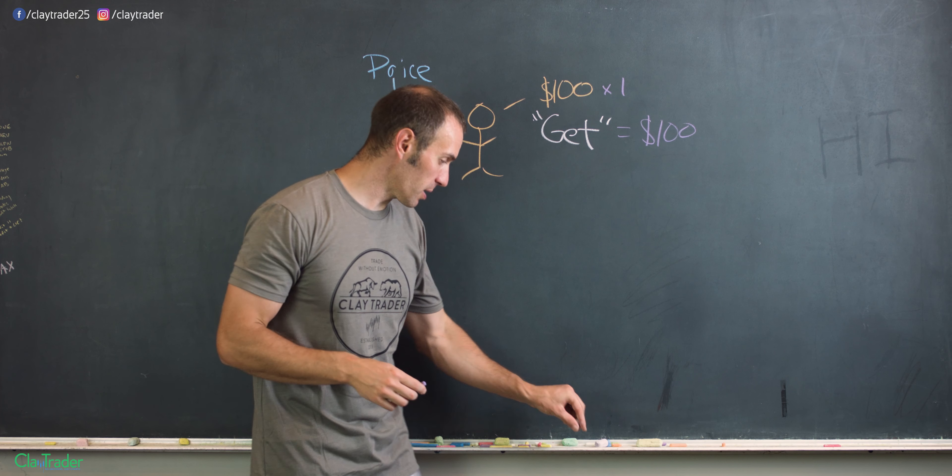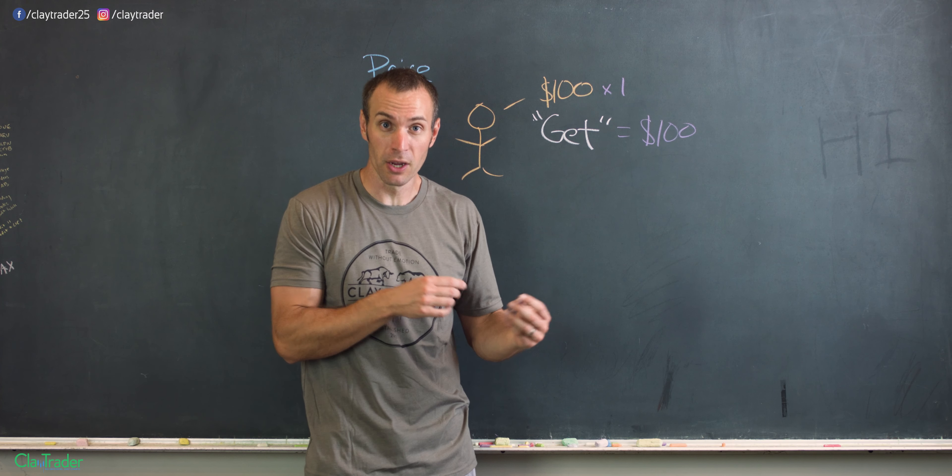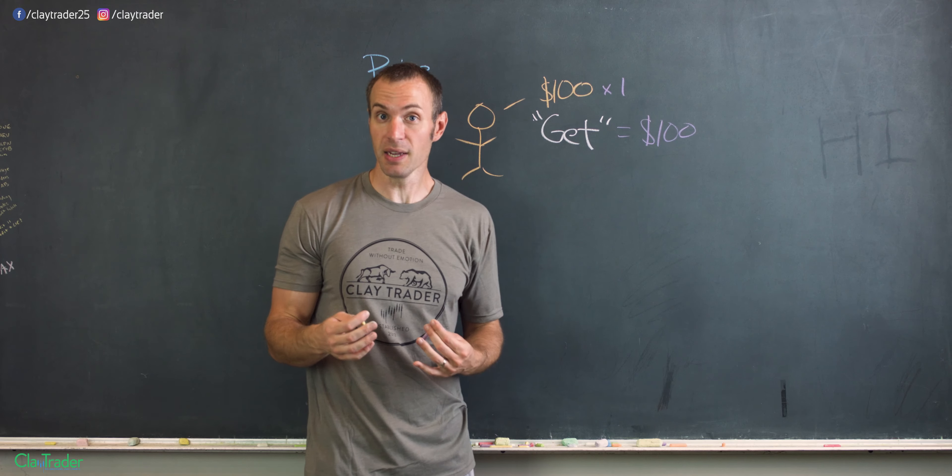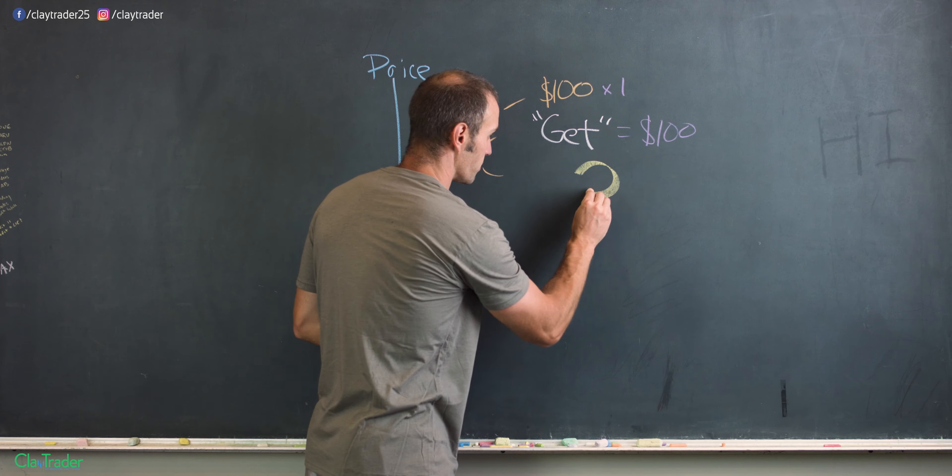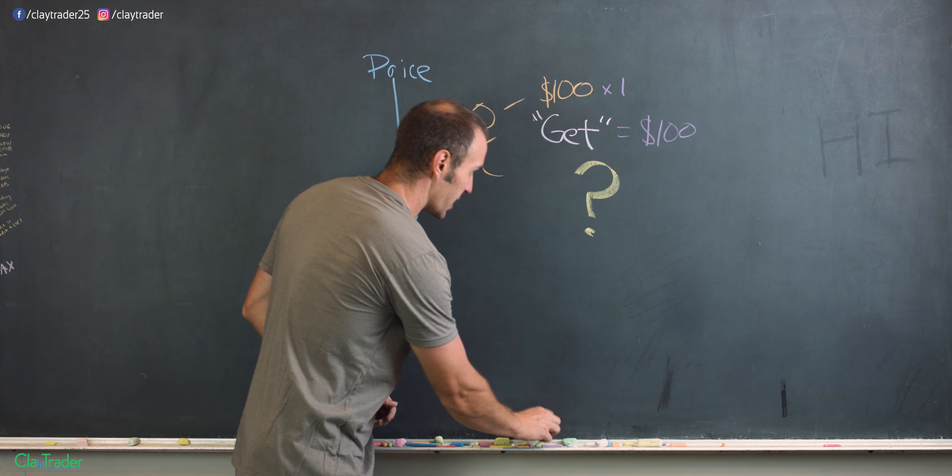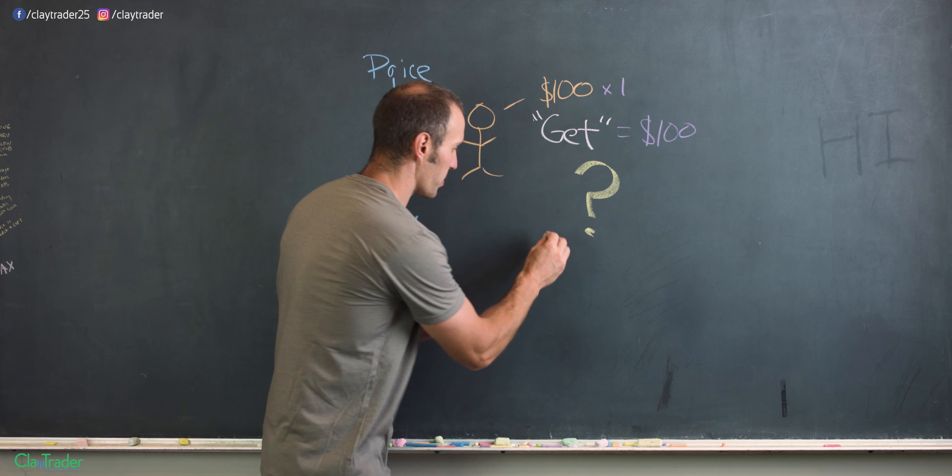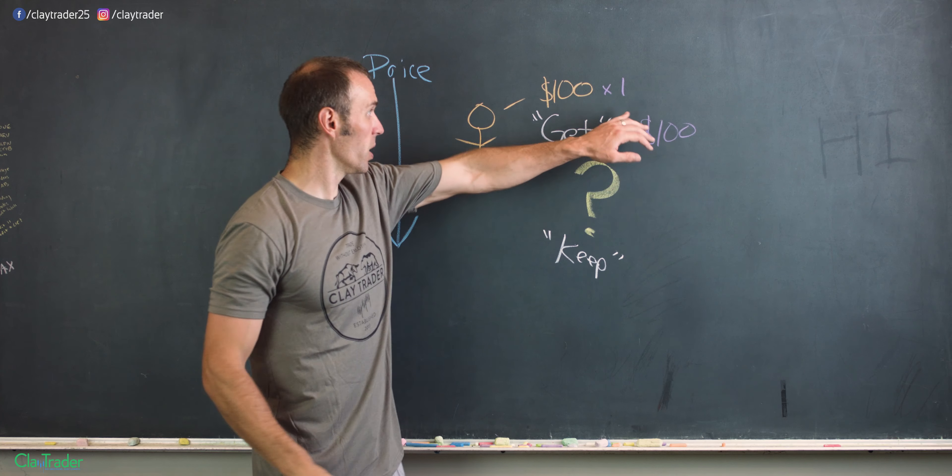So now this is where the big part of a transaction and the trade comes into play, because this next part is going to determine whether John is actually going to make money shorting the stock or actually if he might lose money. So big question mark here comes in the next part. So we have the get, but like I said, now we have to consider the keep.